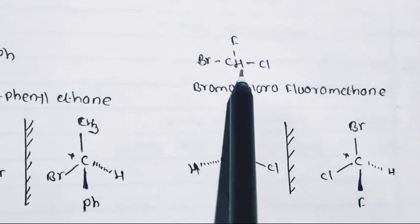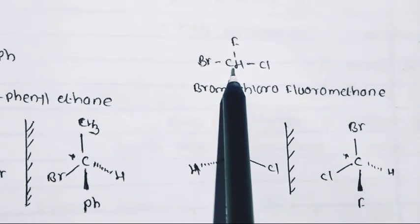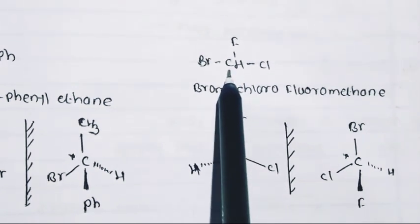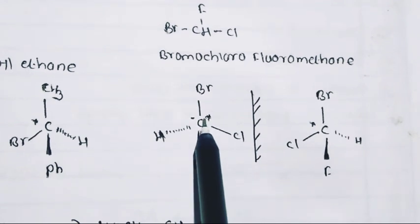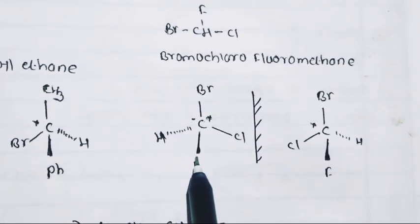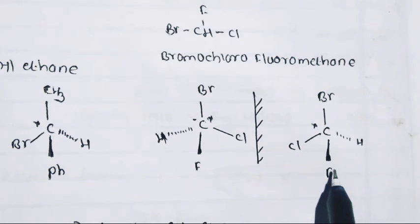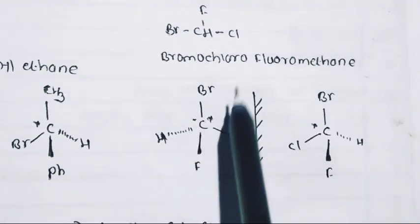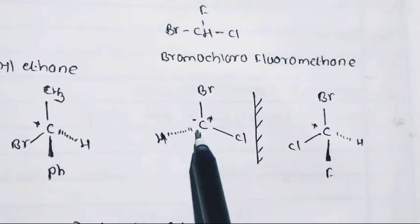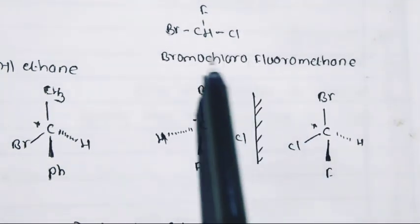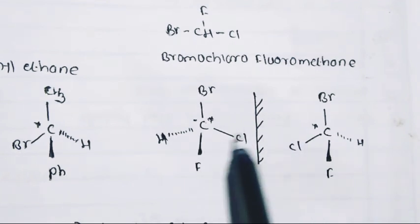Another example: CHBrClF — bromochlorofluoromethane. This carbon is a chiral carbon attached to four different groups: bromine, chlorine, fluorine, and hydrogen. The pair of isomers shows one structure with Br, Cl, F, H in one arrangement and the mirror image with F, H switched. Both have the same molecular formula and structural formula, but the spatial arrangement of the four groups is different. These are non-superimposable mirror images of each other.